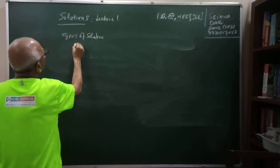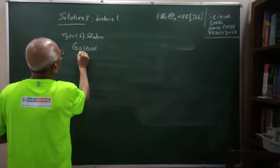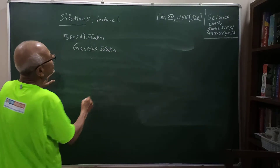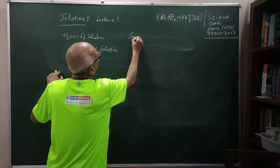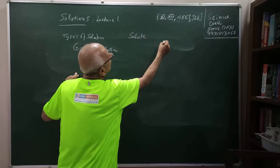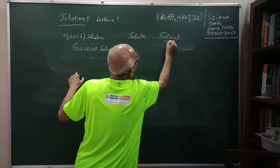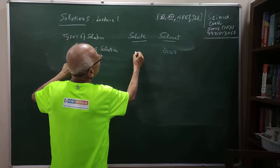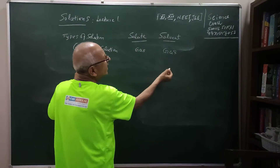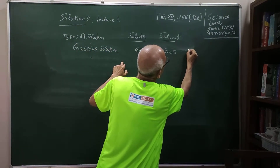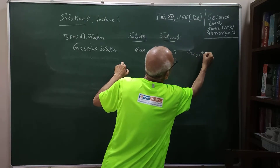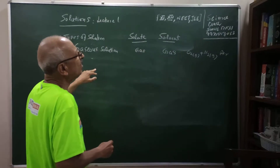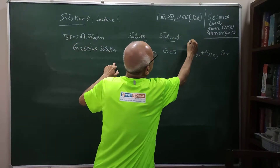In a gaseous solution, the solvent is always a gas. There will be a solute and a solvent. For example, if you put oxygen gas and nitrogen gas together — which is essentially air — that is an example of a gaseous solution where the solute is gas and the solvent is gas.